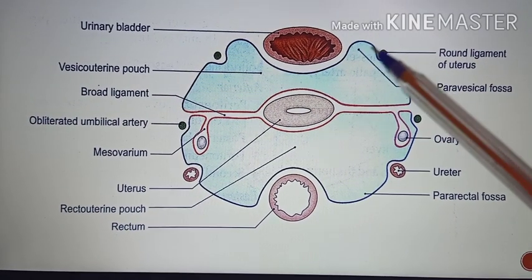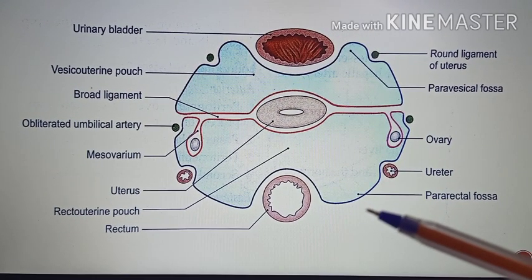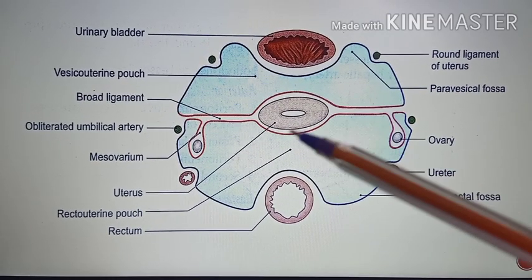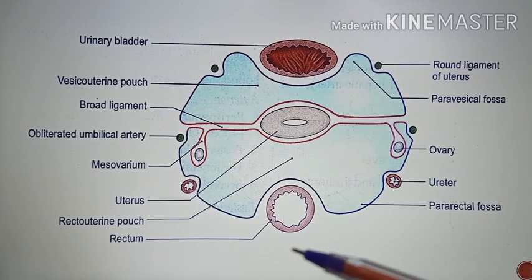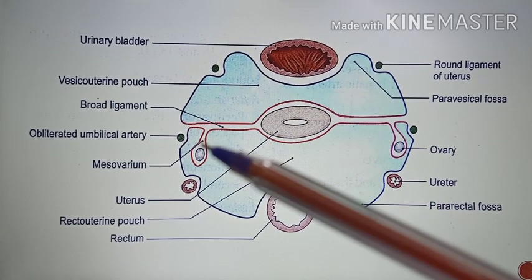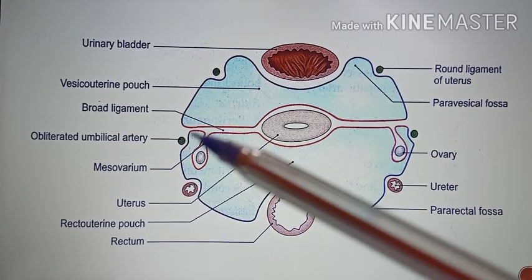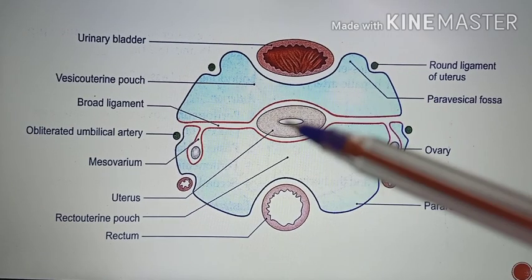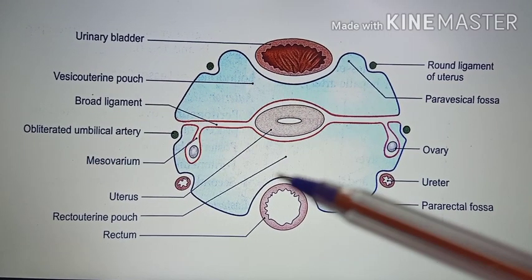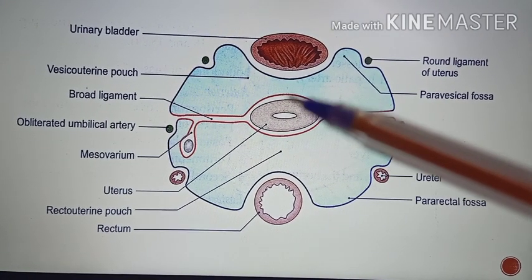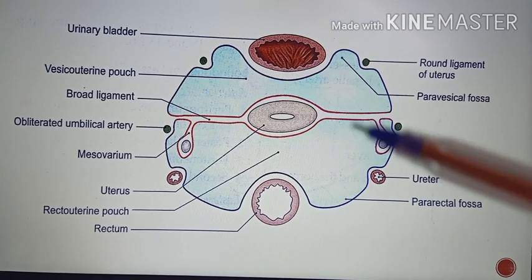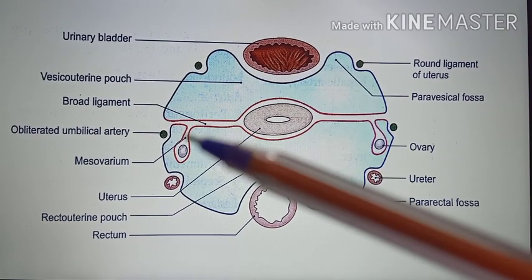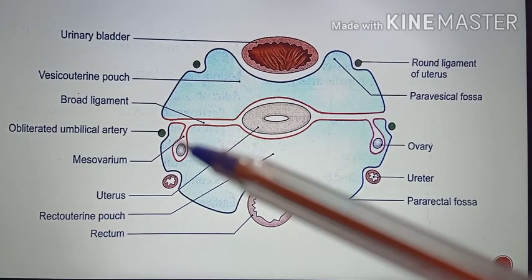This picture shows the horizontal tracing of the peritoneum in the female pelvis. The structures visible are the urinary bladder, uterus, and rectum. The broad ligament and uterus form a transverse partition across the pelvis. The pouch between the uterus and the rectum is called the rectouterine pouch, and between the urinary bladder and the uterus is the vesicouterine pouch. On the lateral aspects are the pararectal fossa and the paravesical fossa. You can also see the meso-ovarium, by which the ovary is suspended.